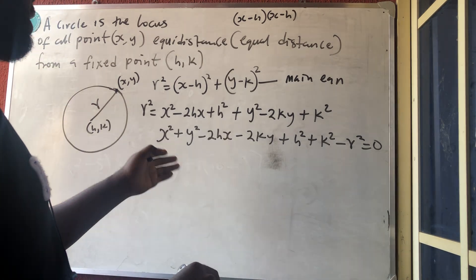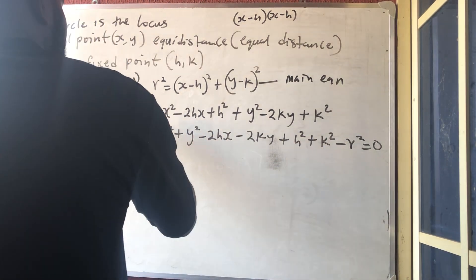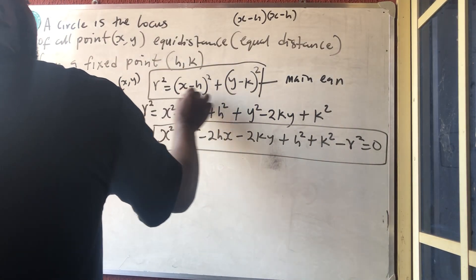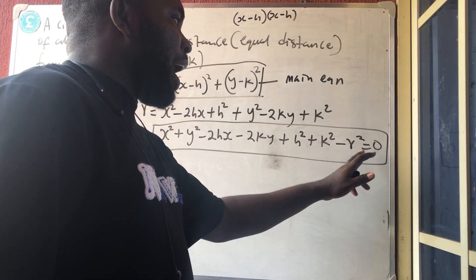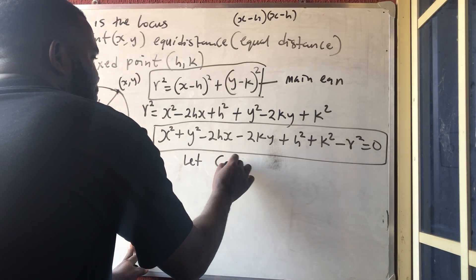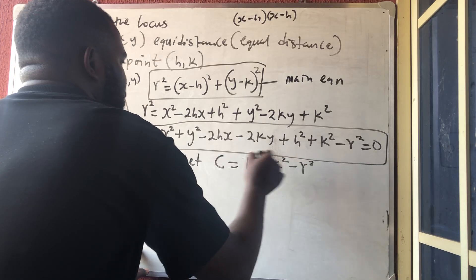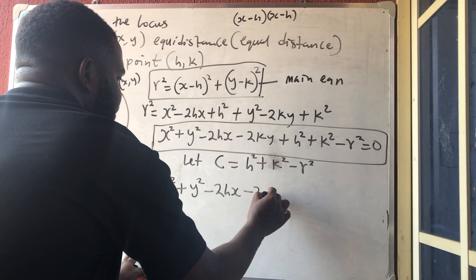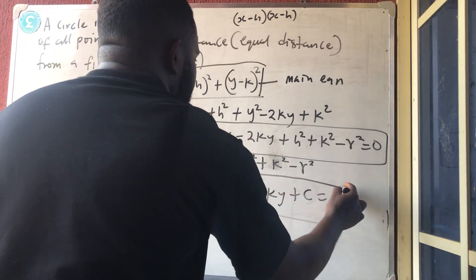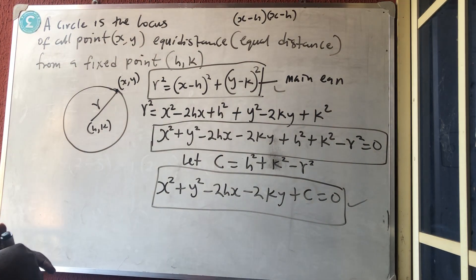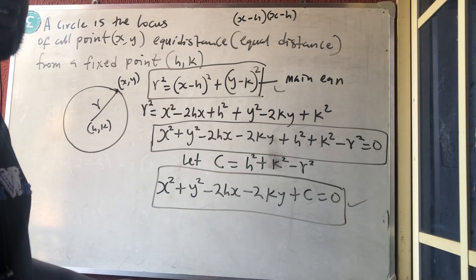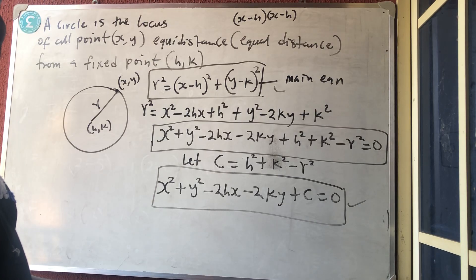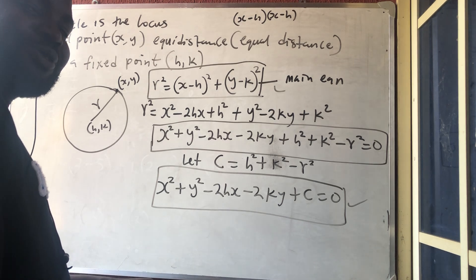Bringing everything to one side and equating to zero gives the general equation of a circle. Letting the constants h squared plus k squared minus r squared equal c, the standard equation becomes x squared plus y squared minus 2hx minus 2ky plus c equals zero. This is the standard equation, and it is very important for solving circle questions. You can remember it as: x squared plus y squared minus 2hx minus 2ky plus c equals zero.